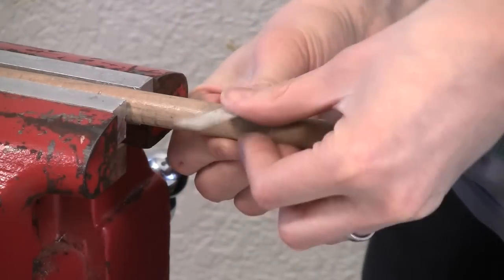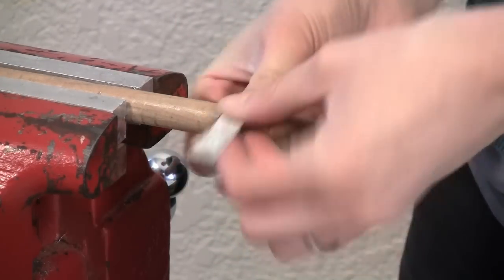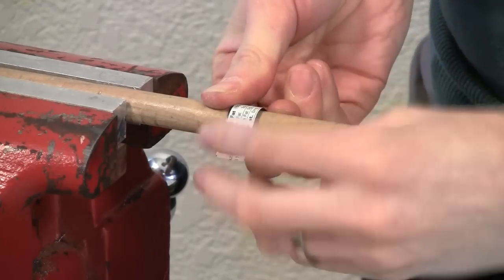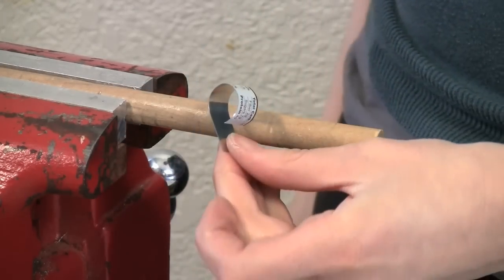For making tighter curves on smaller pieces, sometimes it helps to start at one end of the piece, smoothing the metal over the dowel with your fingers as you go.